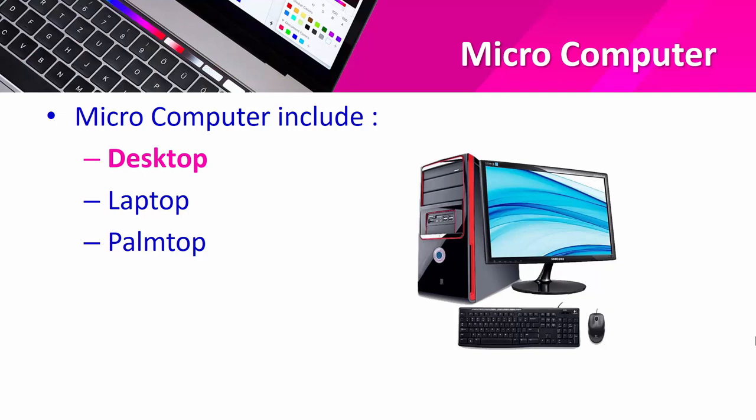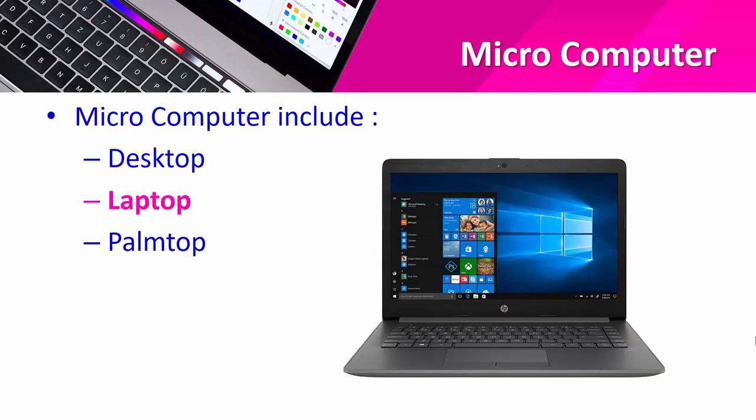The second type of microcomputer is the laptop. A laptop is a personal computer designed for mobile use — it is small and light enough to sit on a person's lap while in use. Compared to full-size computers, a laptop integrates most typical components of a desktop computer, including a display, keyboard, pointing device (touchpad/trackpad), speakers, and battery — all in a small, portable unit.